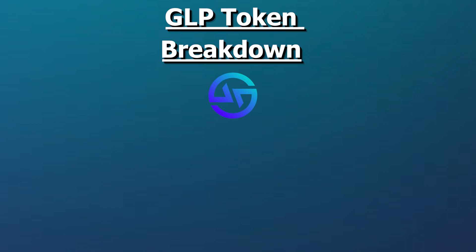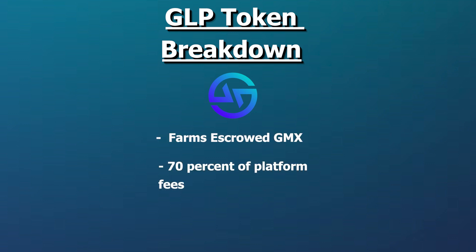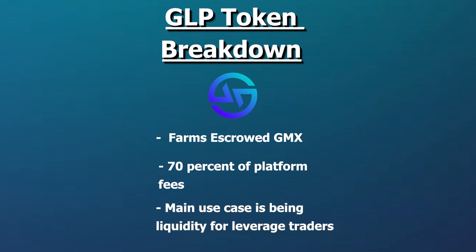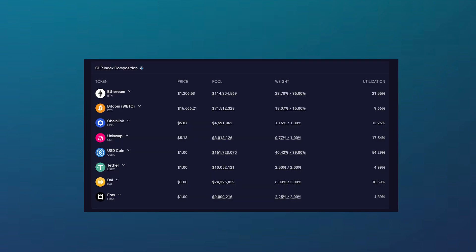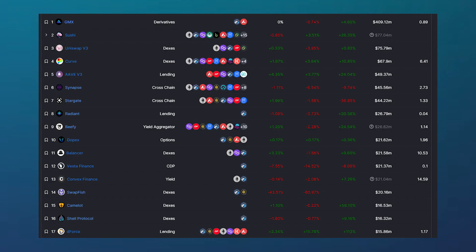GLP is the other side of their tokenomics and offers a few benefits for holders of the token. Holding GLP generates escrow GMX rewards, as well as 70% of the platform's fees distributed in ETH or AVAX, depending on the chain. GLP's main use case is serving as liquidity for traders taking on leverage on the platform, so holders of the GLP token benefit when traders are losing, and lose when traders are winning. GLP is used across many Arbitrum protocols to give users added yield, making it quite important to the ecosystem.